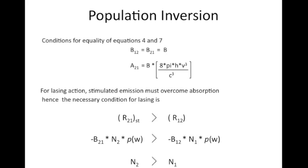For lasing action, that is for light amplification to occur, we want the number of photons emitted by the atoms in the cavity — which are coherent with the photons going in — to be greater than the number of photons going in. Coherent photons are emitted only by stimulated emission. So for lasing action, the rate of stimulated emission must be greater than the rate of absorption. Substituting the values for these rates, the necessary condition is that N2 must be greater than N1. This condition is known as population inversion.